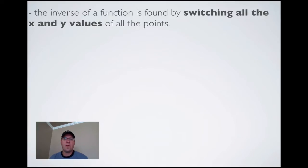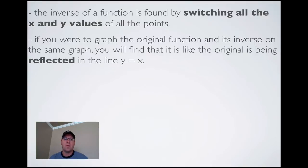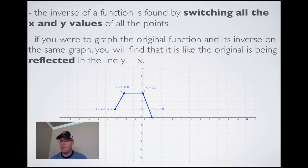The inverse of a function is found by switching all the x and y values of all the points of that function. If you were to graph the original function and its inverse on the same graph, you'll find that the original is being reflected in the line y equals x. Let's take a look at this with an example.